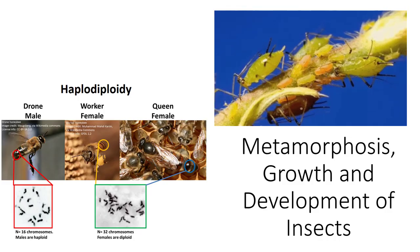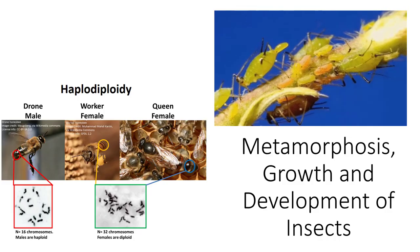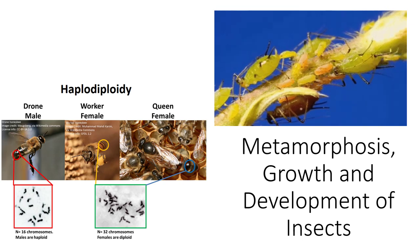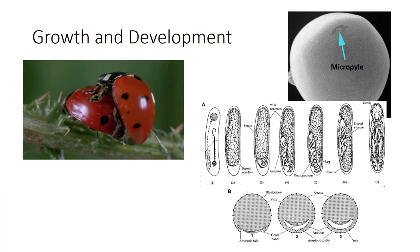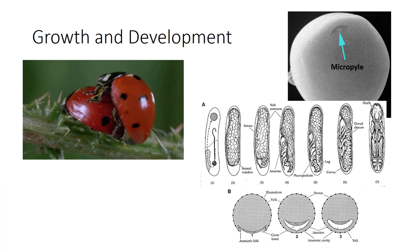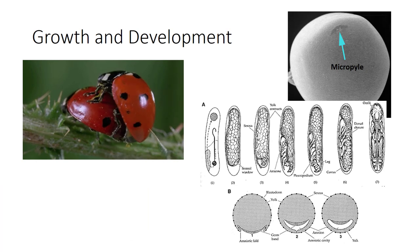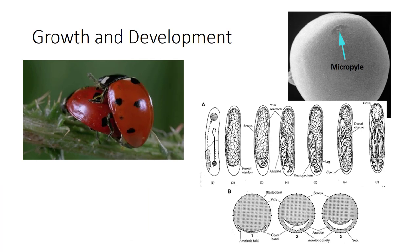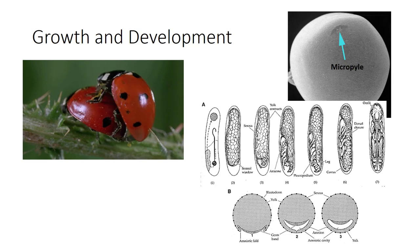I'm Dr. DeBusk, and in this video I'll be going over metamorphosis, growth, and development of insects. A typical life cycle goes through three generalized stages—egg, immature, and adult—but a lot goes on in between those stages.